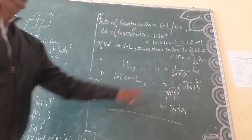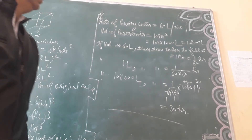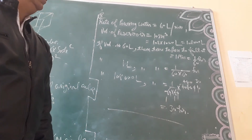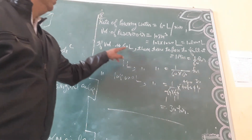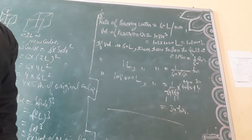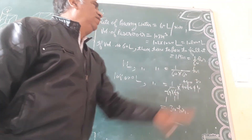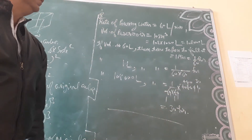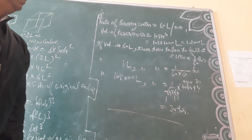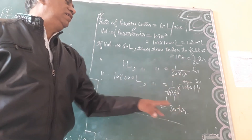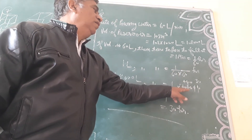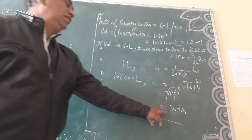We have converted to hours, so 1 minute equals 1/60 hour. If the volume is 1 liter, it takes 1/60 hour. Dividing further: 1/60 divided by 60 gives 1/3600 hour per liter. The volume of the reservoir is 108,000 liters, so multiplying 1/3600 by 108,000 gives the answer: 30 hours.